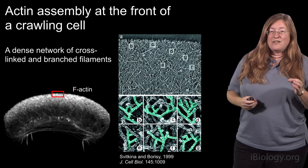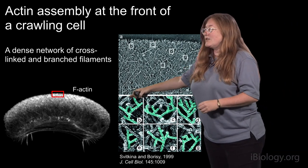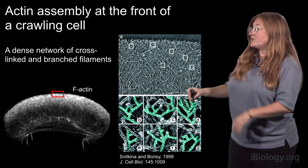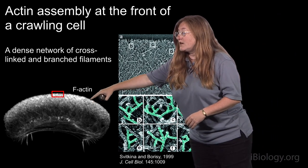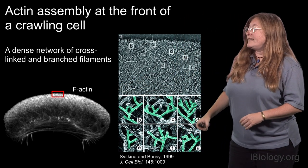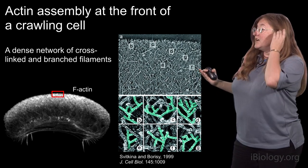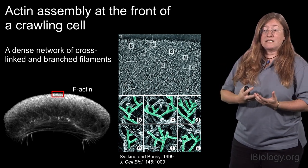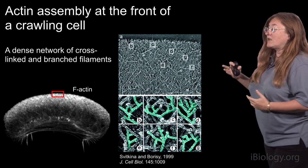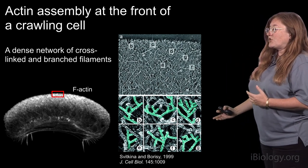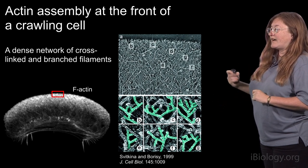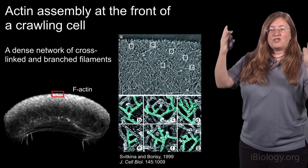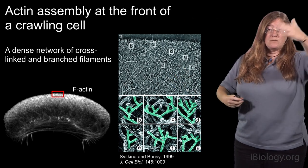If we look at the leading edge of a crawling cell — in this case, the image on the bottom here is a fixed cytoskeleton from a cell called a keratocyte — we can label the actin filaments and see their overall distribution, which is very much focused towards the front, towards the leading edge. And in this beautiful electron micrograph by Tanya Svitkina, you can see at the ultra-structural level exactly how abundant and densely intertwined and cross-linked these actin filaments actually are. The bottom boxes show individual regions magnified, where you can see the actin filaments are not only cross-linked to each other but actually branching off one another to make this large structure that is able to push the cell forward.